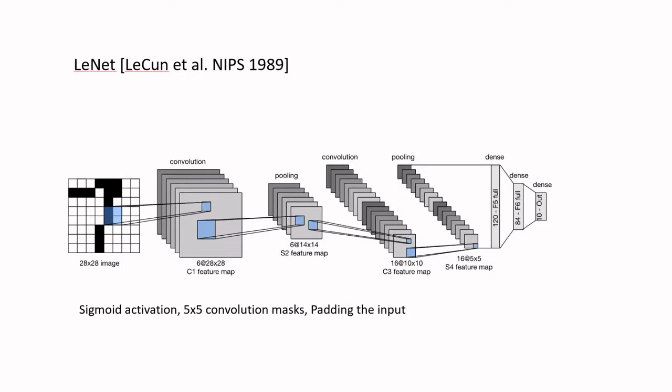Here is a picture of LeNet proposed in 1989. The input is a single-channel grayscale image of 28 by 28 pixels. The first stage consists of six filters of size 5 by 5. The output of the convolution goes through a pooling operation using a 2 by 2 mask, resulting in 14 by 14 feature maps — six of them.